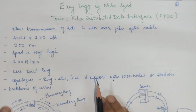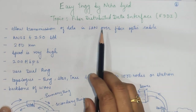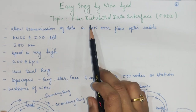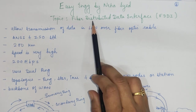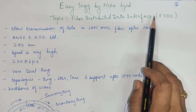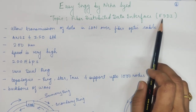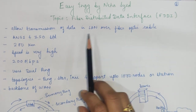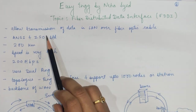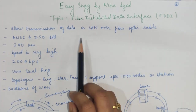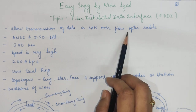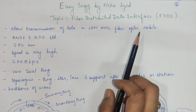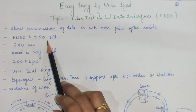Hello friends, welcome back to Easy Engineering by Neha Syed. Today's topic is Fiber Distributed Data Interface, mostly known as FDDI. It allows the transmission of data in a local area network over a fiber optic cable. It is a set of ANSI and ISO standards.